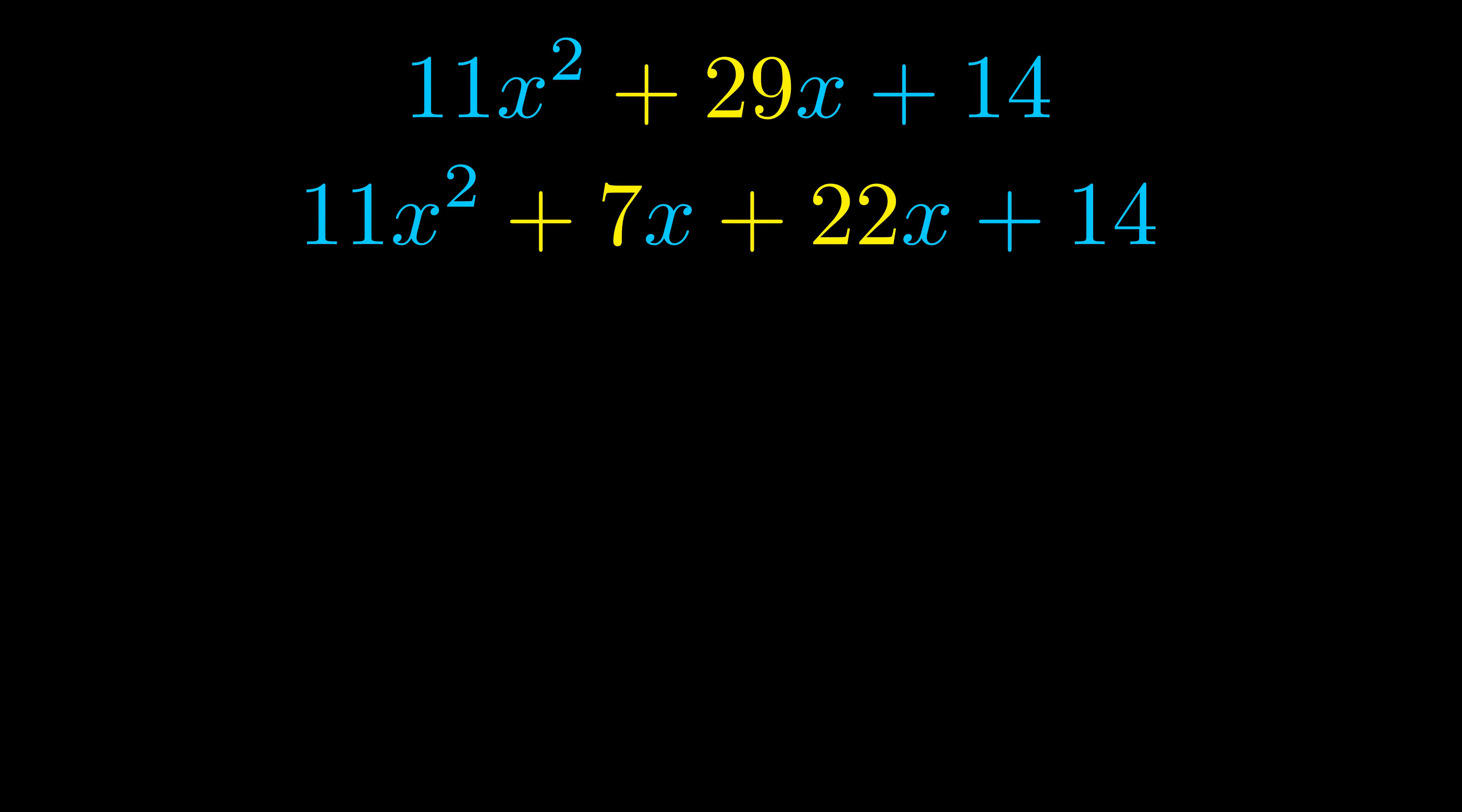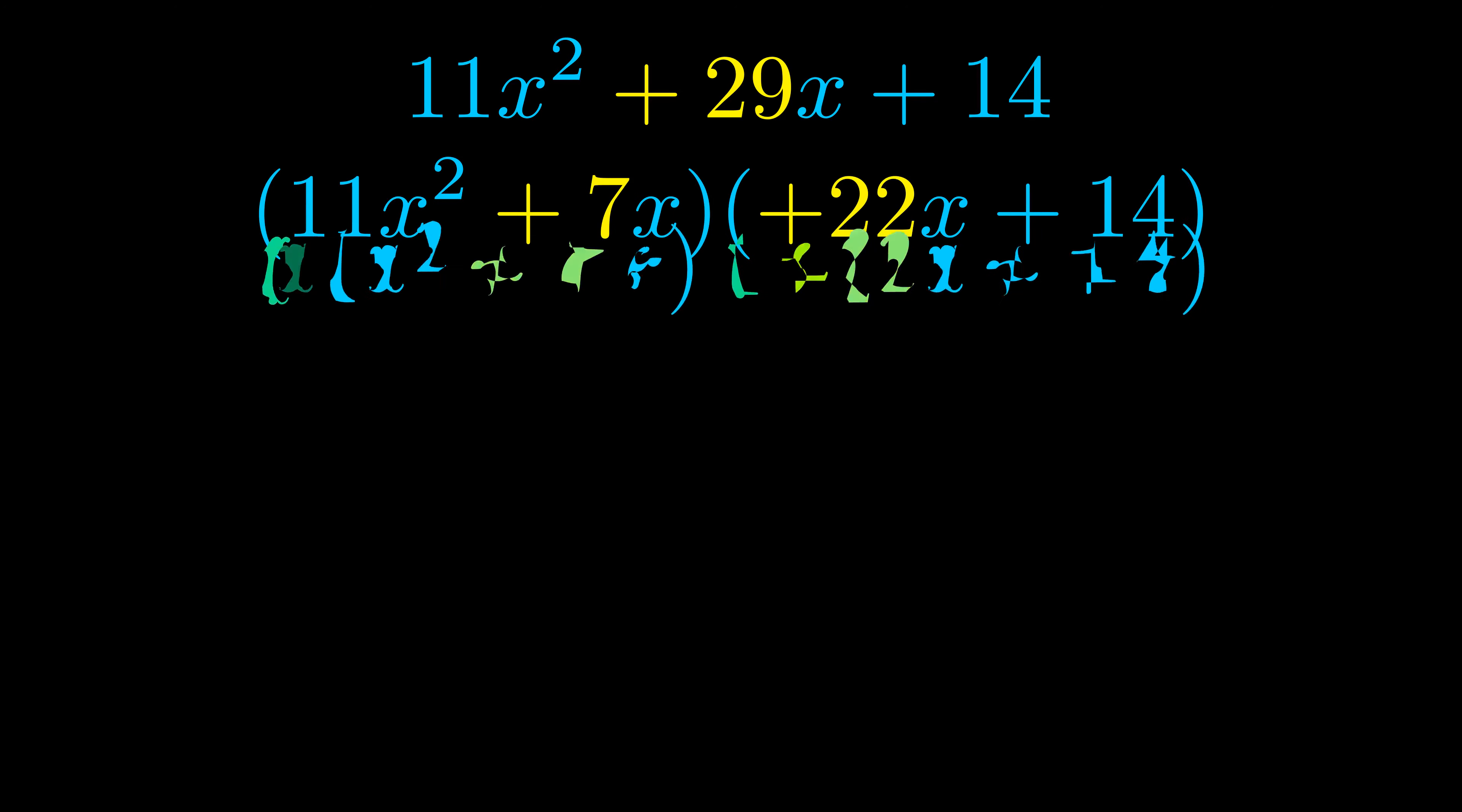Once we've done this we go ahead and we put parentheses around the first term and the last term. And we do that so that we can take the greatest common factor out of both terms. We can see the greatest common factor is now outside in green. Notice also how what remains inside of the parentheses is the same in both cases. The blue values are the same.